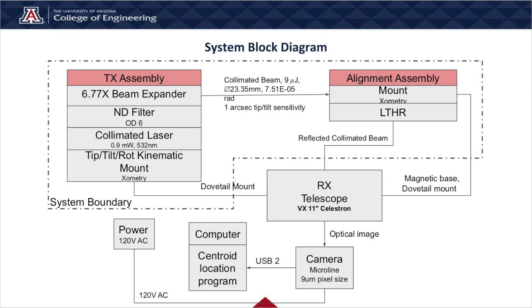The laser communication system consists of a TX assembly on the left, which includes a beam expander, ND filter, and collimated laser, all connected to a tip, tilt, and rotation kinematic mount. The beam is sent to the alignment system where it passes through the lateral transfer retroreflector and on to the RX unit. The alignment assembly is connected to the system by an on-off magnetic base and is removed during laser communication. The beam then passes through the RX unit and is picked up by the microline detector. The recorded image is then processed with centroid detection software, and the software output is used as feedback for the alignment process.